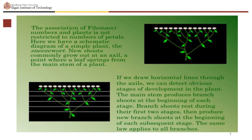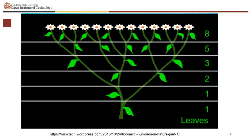The association of Fibonacci numbers and plants is not restricted to numbers of petals. Here we have a schematic diagram of a simple plant, the sneezewort. New shoots commonly grow out at an axle — a point where a leaf springs from the main stem of the plant. If we draw horizontal lines through the axles, we can detect obvious stages of development in the plant. The main stem produces branch shoots at the beginning of each stage. Branch shoots rest during their first two stages, then produce new branch shoots at the beginning of each subsequent stage.